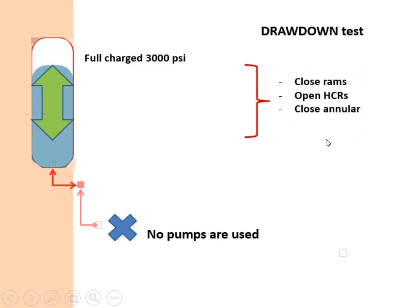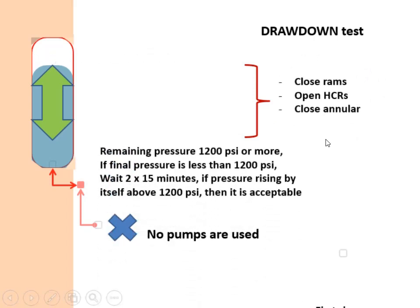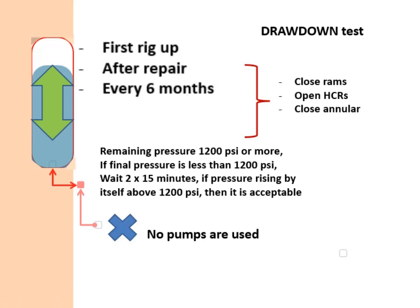The final pressure after closing all RAMs, open HCRs, and close annular should be above 1200 PSI. If the final pressure is less than 1200 PSI, it is allowed to wait 2 by 15 minutes to observe if the pressure increases by itself. If the pressure does not increase above 1200 PSI, then the test is fail.